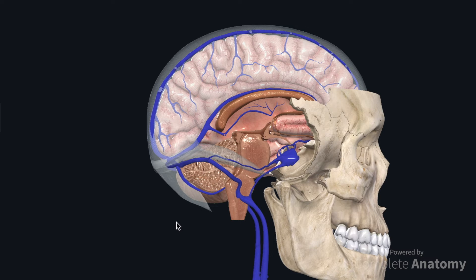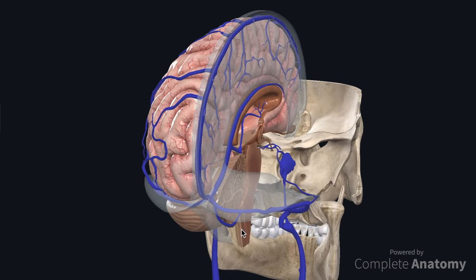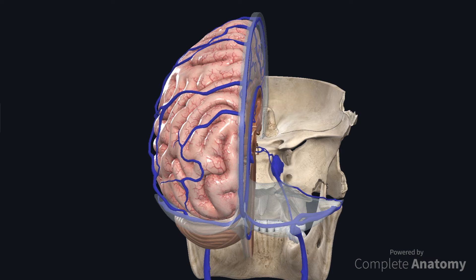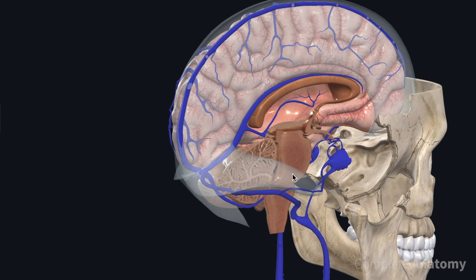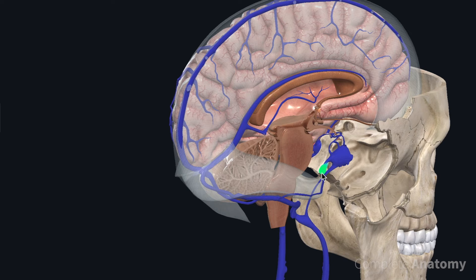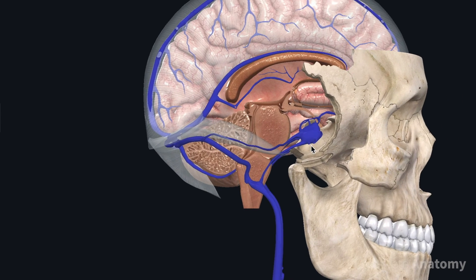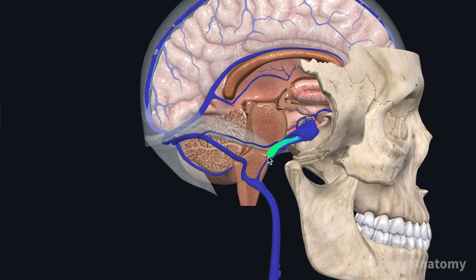The last sinus we're going to discuss is the cavernous sinus. The cavernous sinus is located lateral to the sella turcica, which is approximately here, so we have a cavernous sinus on each side. The cavernous sinus is a plexus of veins that can drain posteriorly into the sigmoid sinus via the superior petrosal sinus, which runs along the tentorium cerebelli, or directly into the internal jugular vein via the inferior petrosal sinus. The inferior petrosal sinus is the first tributary of the internal jugular vein.